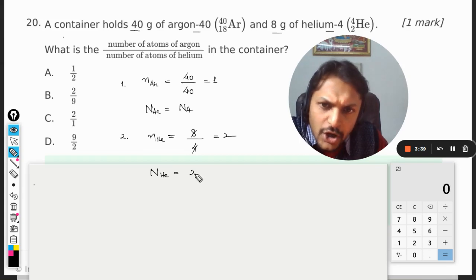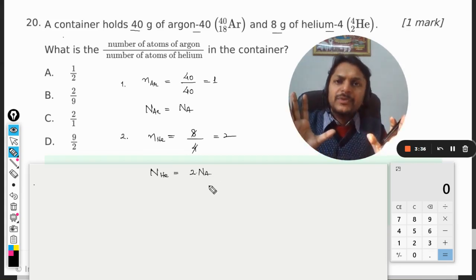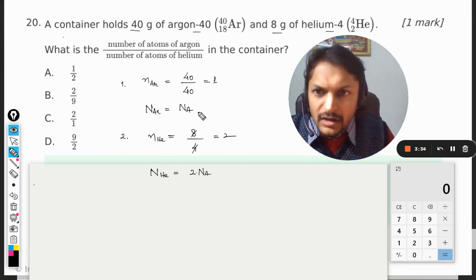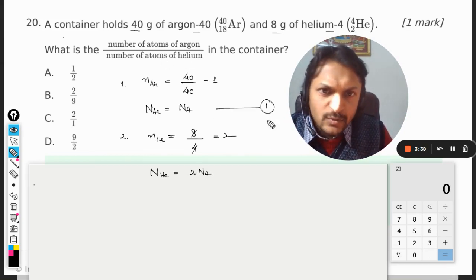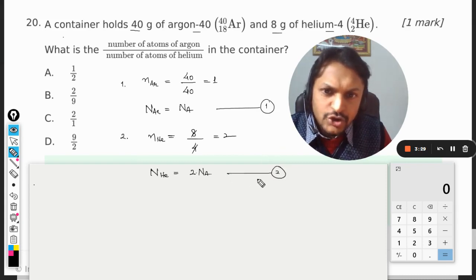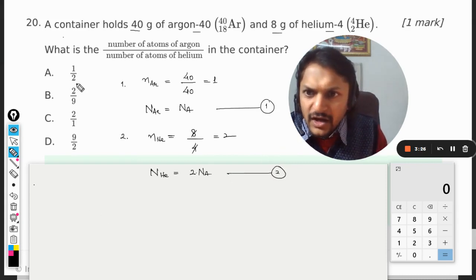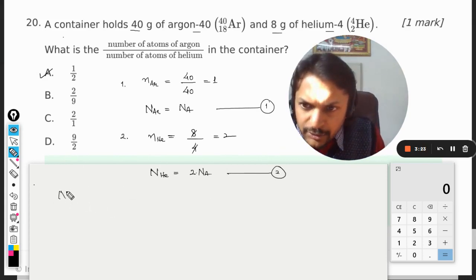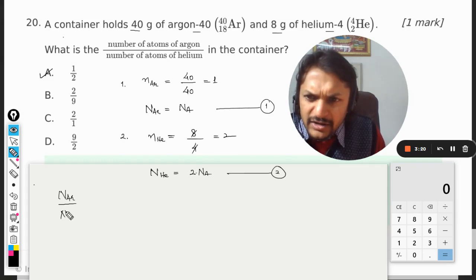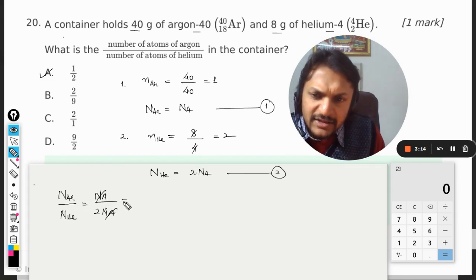Now we want to divide number of argon like this: 1 by 2. And there we are, the answer should be A, that is half, isn't it? Number of molecules of argon divided by number of molecules of helium is Na divided by twice of Na, and there you are, it is 1 by 2.